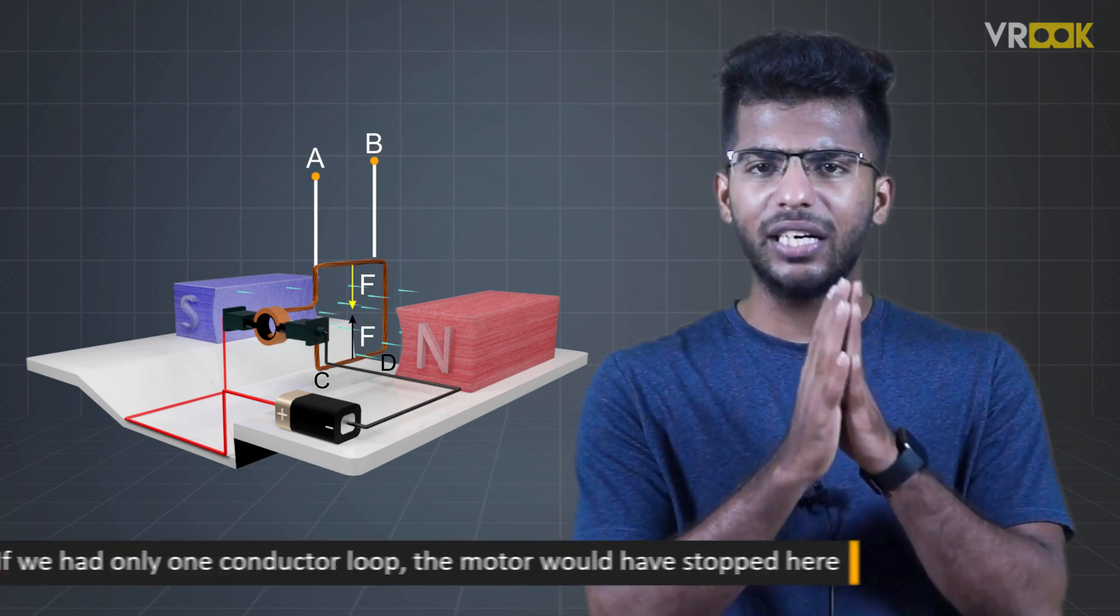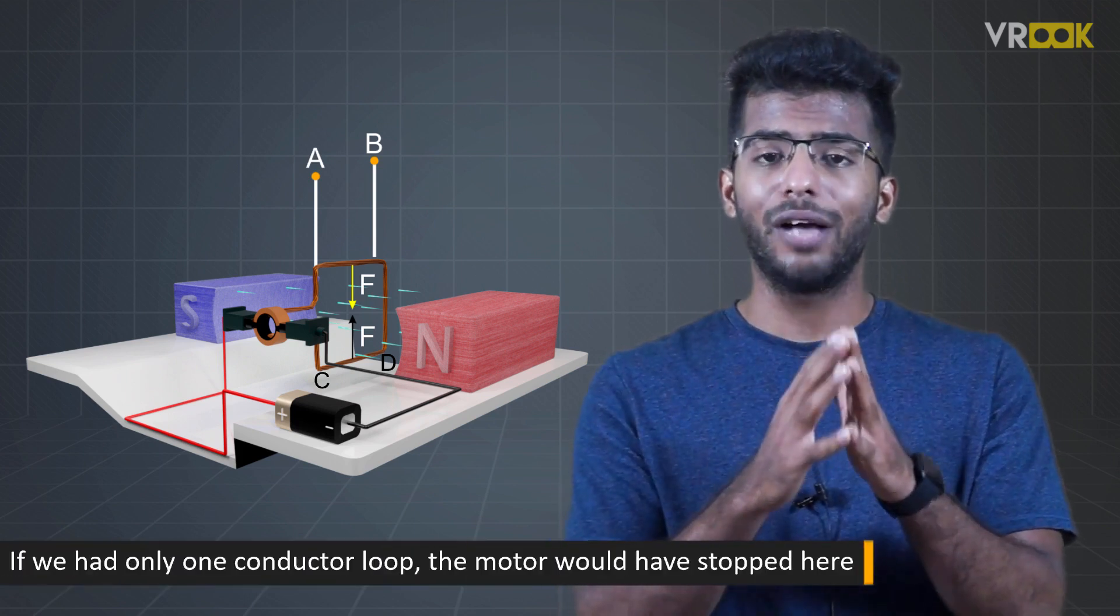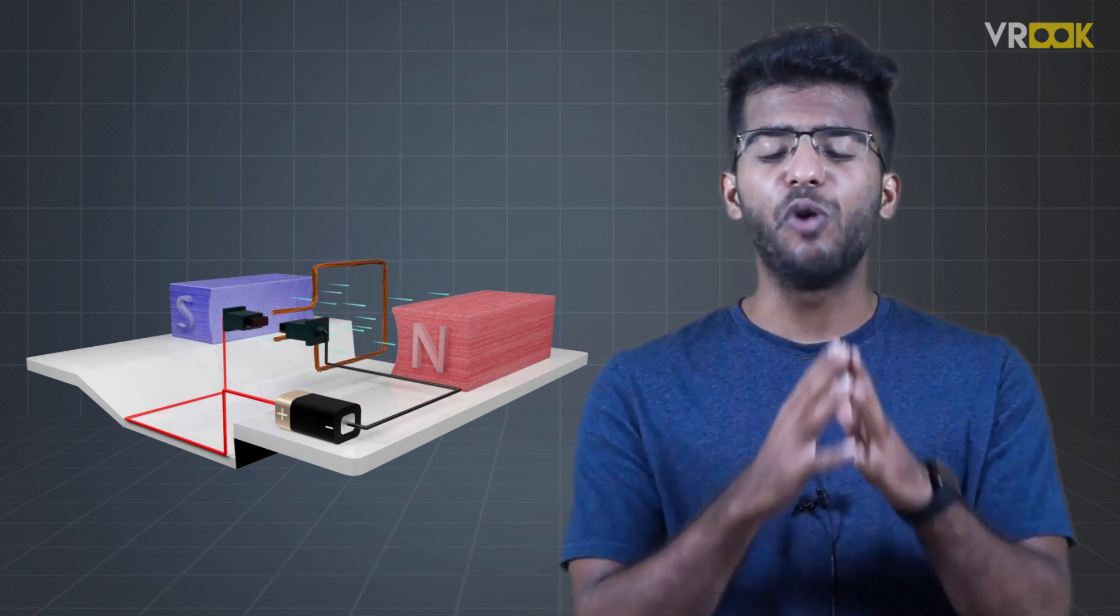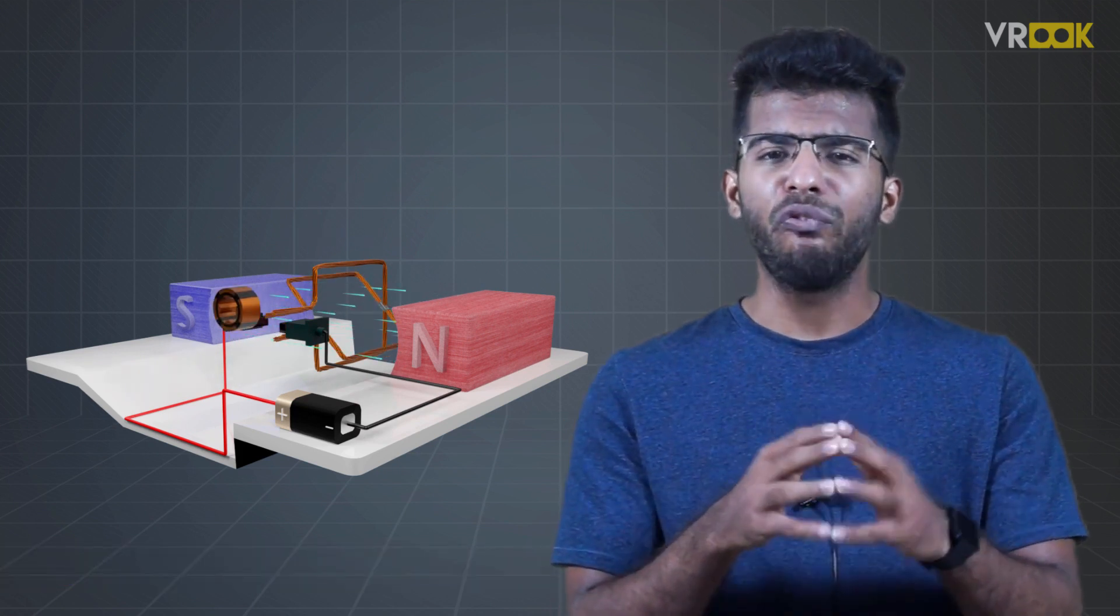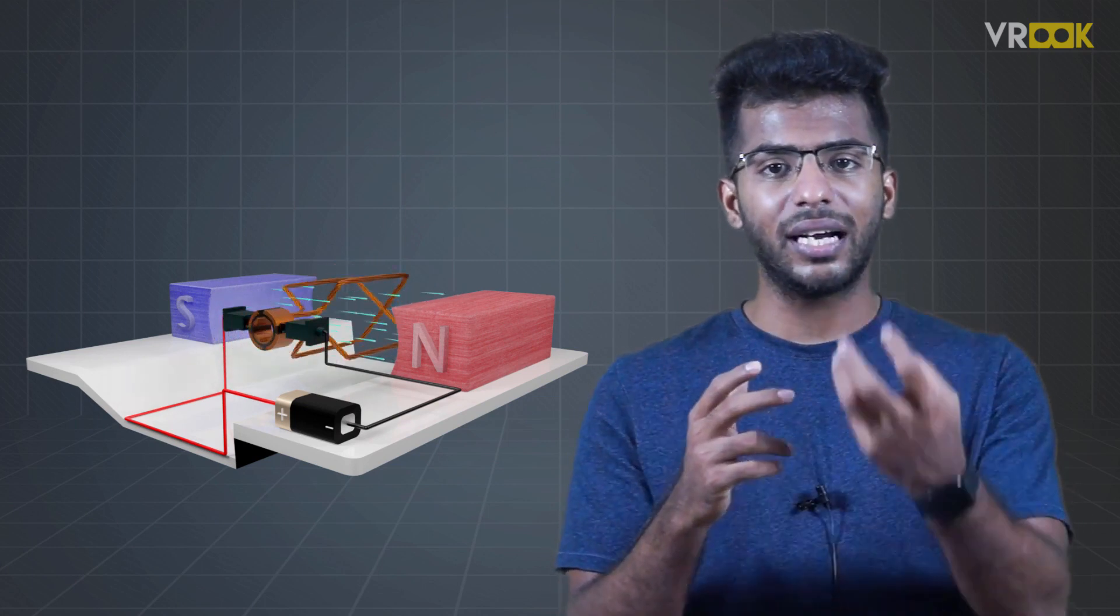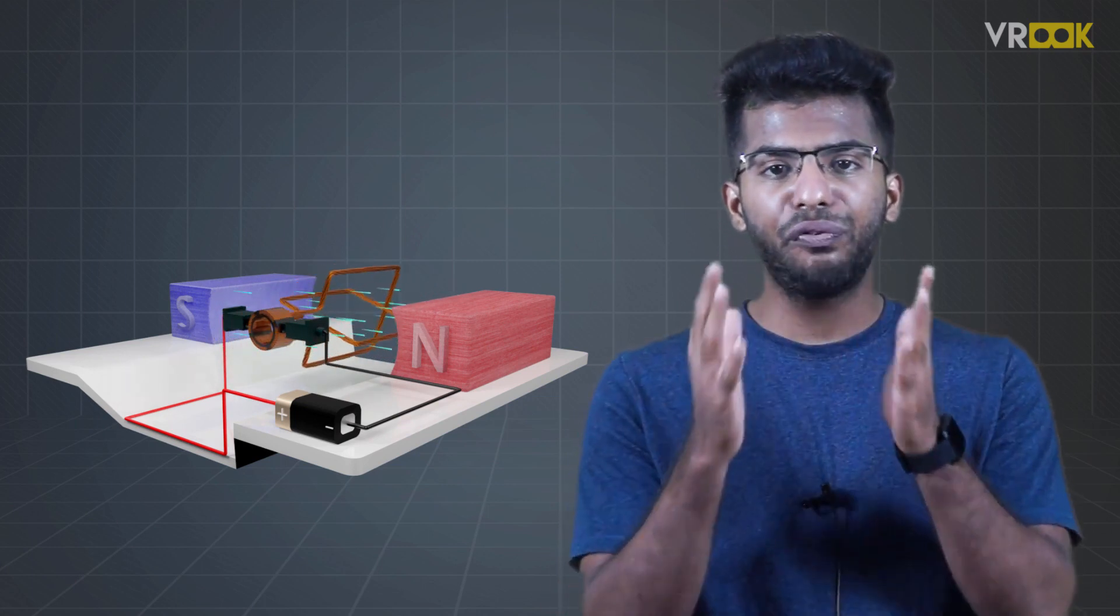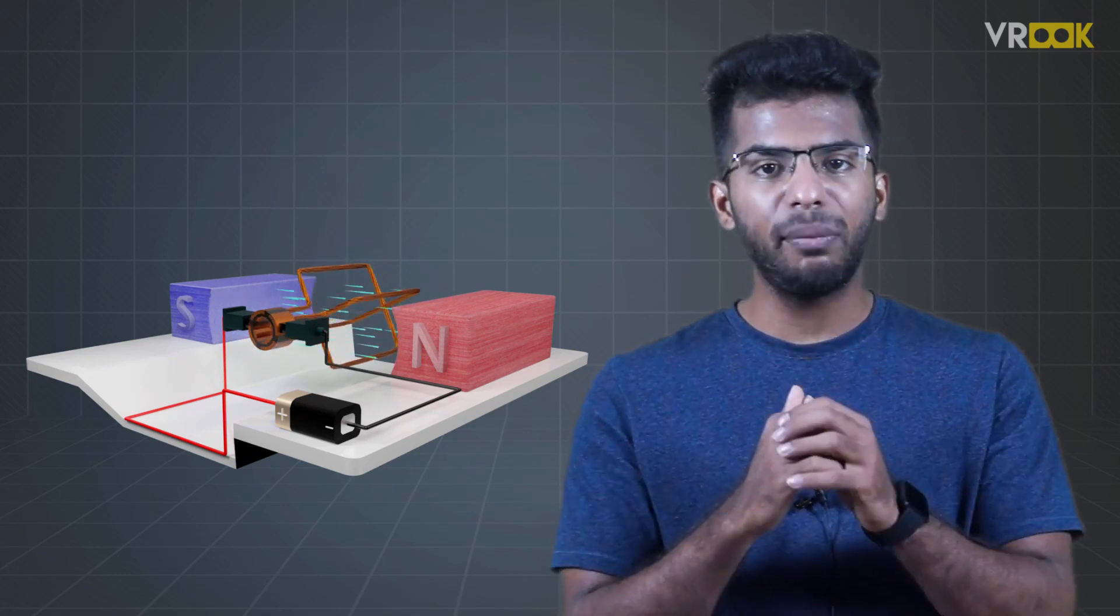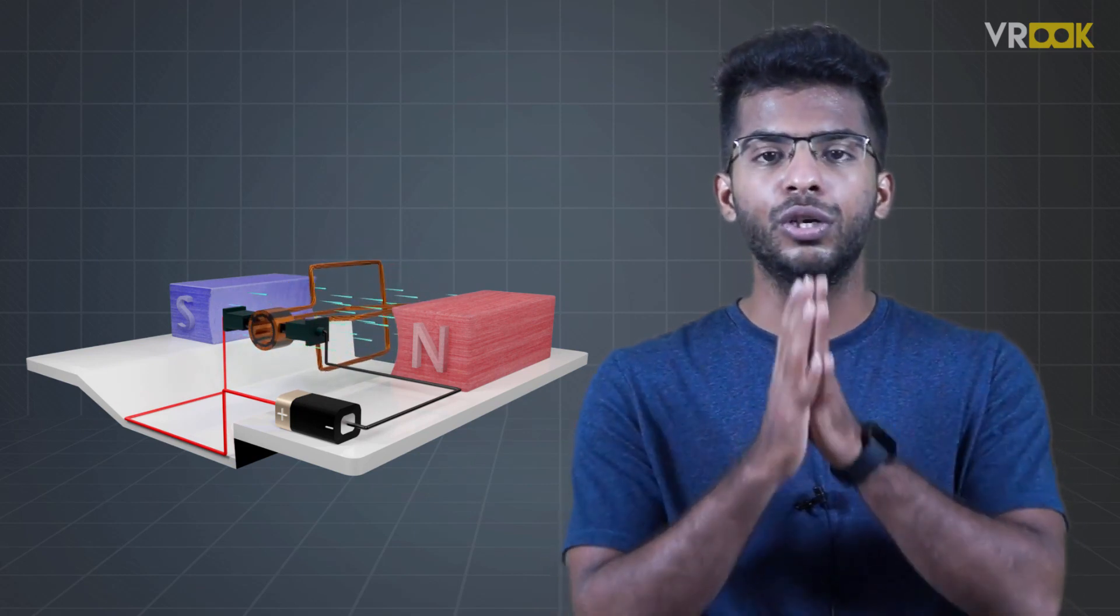If we had only one conductor loop, the motor would have stopped there. However, in practical motors, we'll have many such loops. So, whenever one such conductor is in 90 degree position, some other conductor will be at a different position and we'll be experiencing the force. This will make the motor operation smoother.